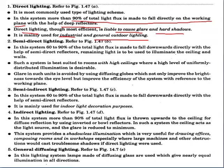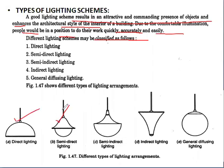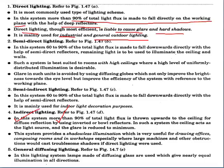In semi-direct lighting, 60 to 90% of the total light flux is made to fall downwards directly with the help of semi-direct reflectors. The remaining light is used to illuminate the ceiling and walls. In case of direct lighting, light falls directly downward only; but in semi-direct lighting, 60 to 90% of the flux is directed downward while the rest illuminates ceilings and walls. Such a system is best suited to rooms with high ceilings where a high level of uniformly distributed illumination is desired.